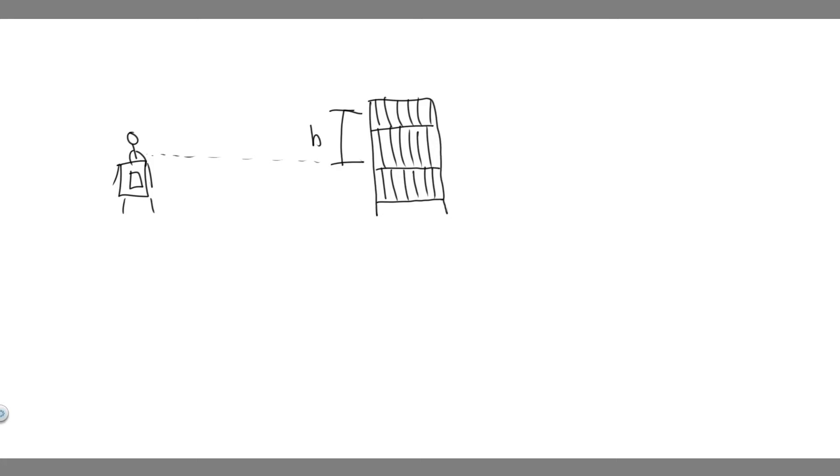In this problem, we're told a student lifts a 1.42 kilogram book from her desk to a bookshelf. If the gravitational potential energy of the book-Earth system increases by 9.08 joules, how high is the bookshelf above the desk?